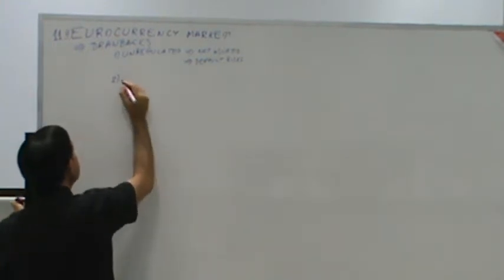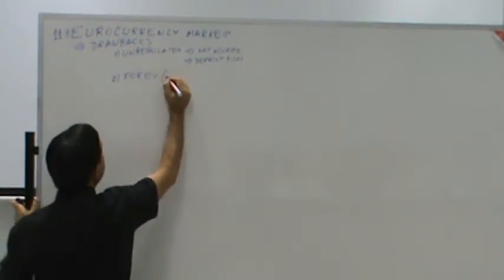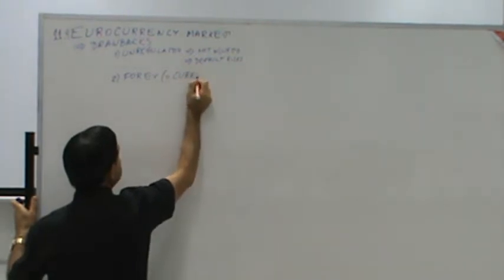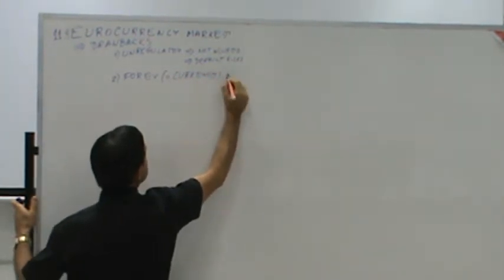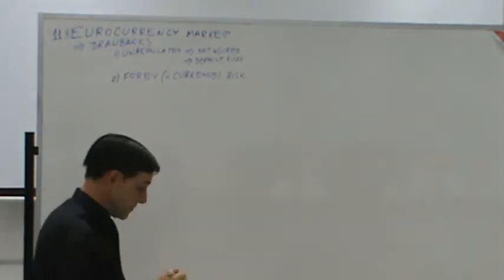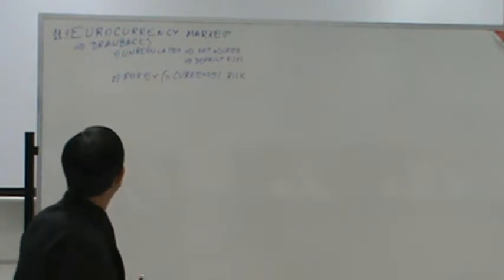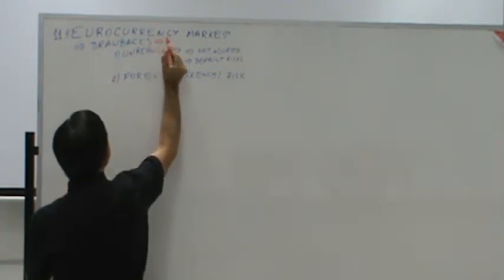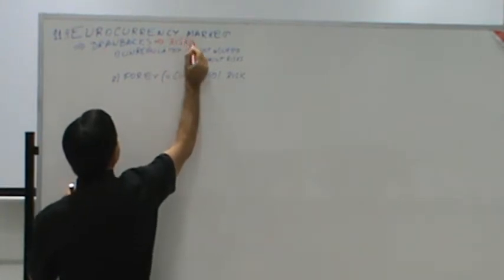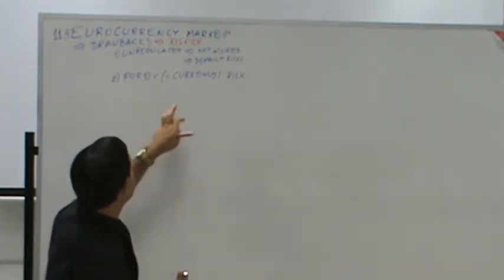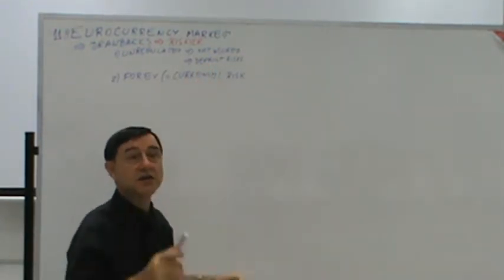It's forex or foreign exchange risk. Forex is the same as currency risk. So if we got to say what the drawbacks are, the drawbacks: it is riskier. It is a higher default risk and a higher currency risk.